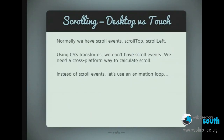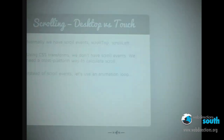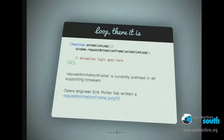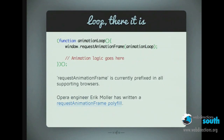Now what we've got is two very different approaches to scrolling. Normally on desktop you've got scroll events, scroll top, scroll left — you don't have any of that when you use something like iScroll, so we need to normalize this somehow. Instead of events, let's use an animation loop. You can do this using requestAnimationFrame, which calls a loop over and over again.